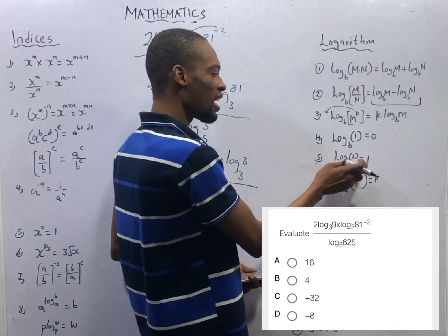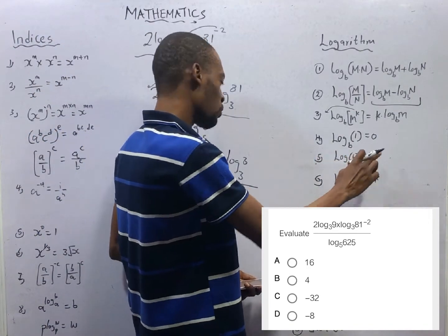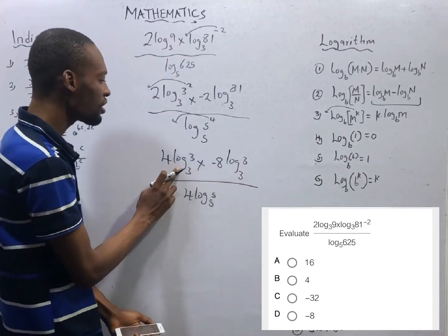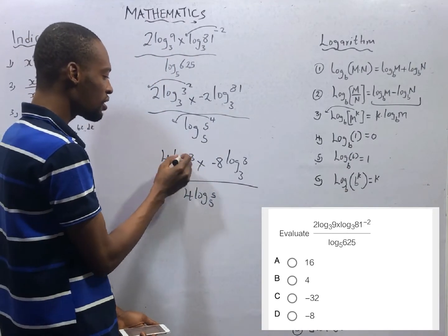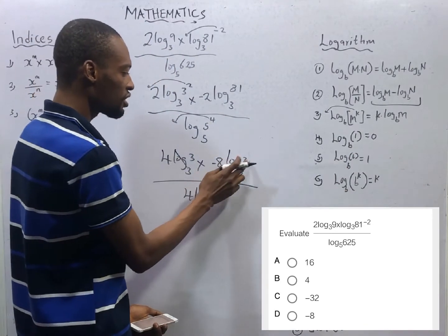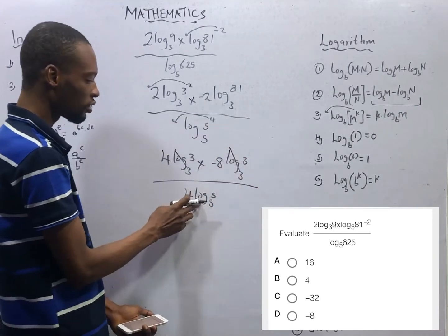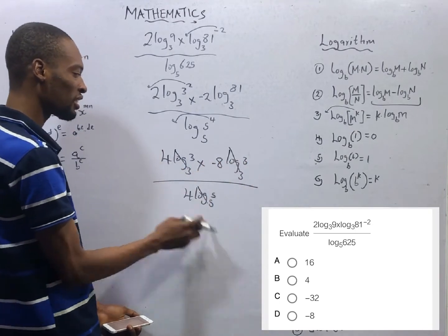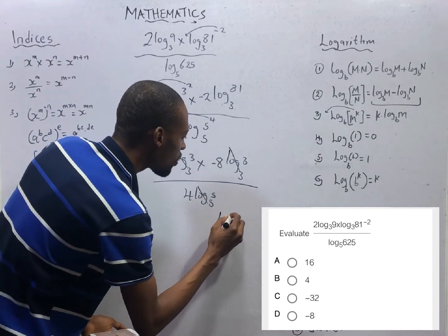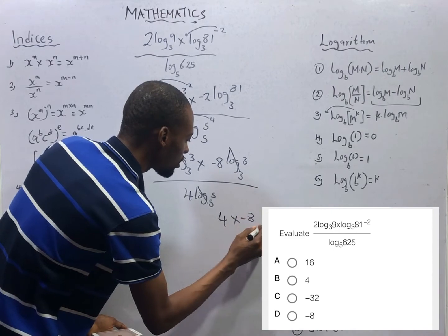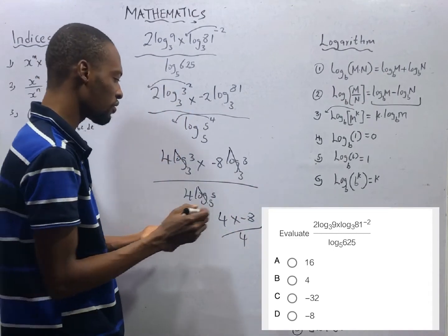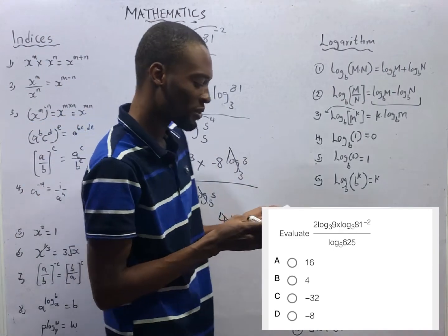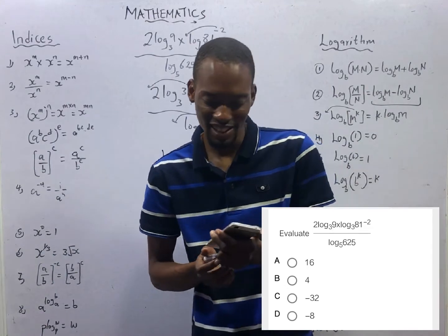If the log and the base are the same, that will give you 1. So log 3 to base 3, all with base 3 is 1. Log 3 with base 3 is 1. Log 5 with base 5 is 1. So 4 times 1 minus 8 times 1, 4 times 1. So give you 4 minus 8 over 4. That will give you minus 8. Option D is the correct option.